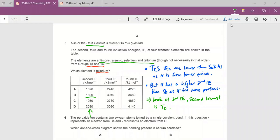Now we look at question three. The use of the data booklet is relevant to this question. The table below shows the second, third, and fourth ionization energies of four different elements. The elements are antimony, arsenic, selenium, and tellurium. They want us to identify which element is tellurium.